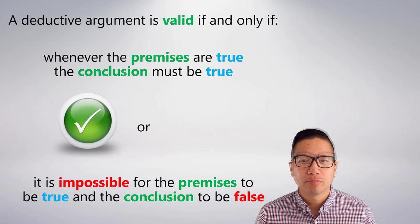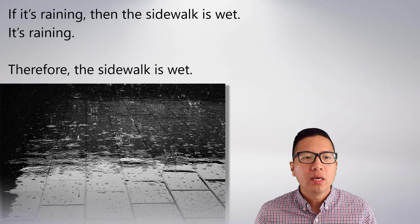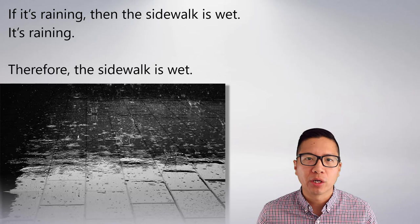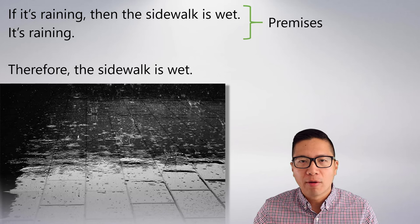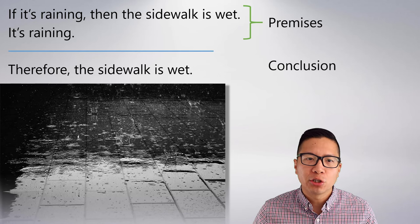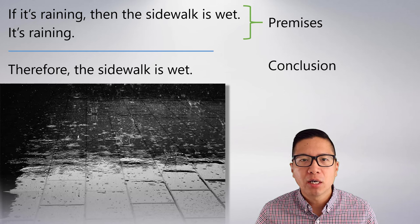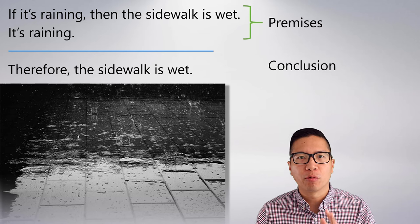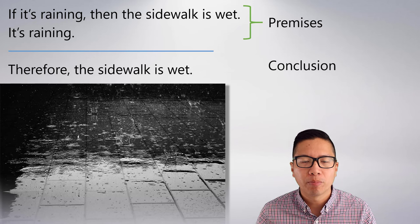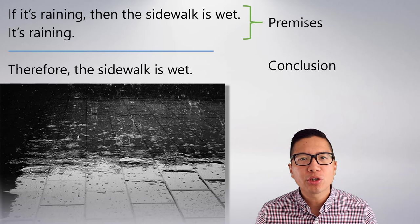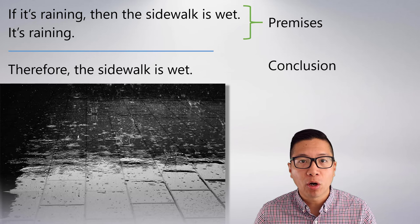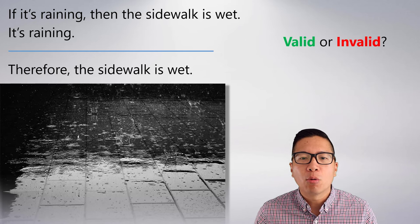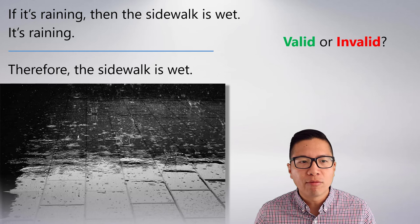Let's look at an example of an argument. 'If it's raining, then the sidewalk is wet. It's raining. Therefore, the sidewalk is wet.' This is a standard, very simple argument. It has two premises, which I've tagged off there, and a conclusion. The conclusion is marked by the word 'therefore' so that we know it's meant to follow. The question we want to ask about this argument — in deductive form — is whether or not it is valid or invalid.